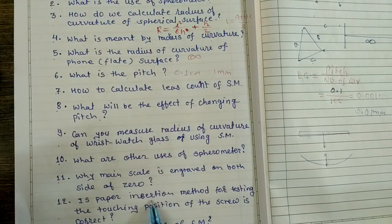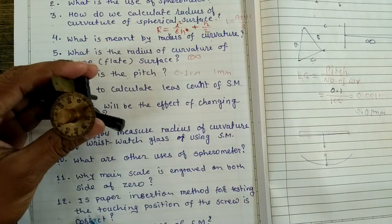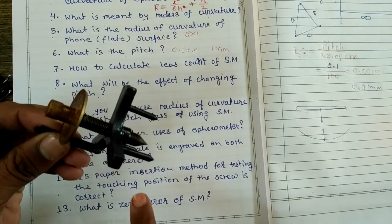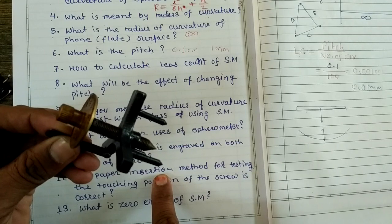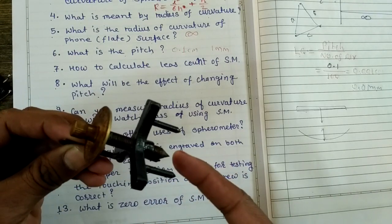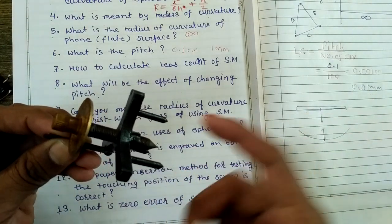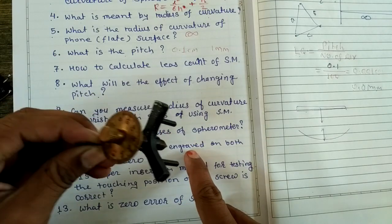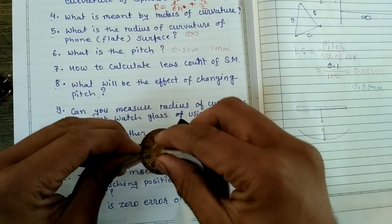Is paper insertion method for testing the touching position of the screw correct? Paper insertion method is not good. Actually, we check that the tip of the spherometer should touch the plane. We put it and rotate, and see that this tip is touching.